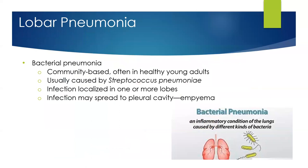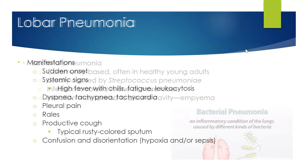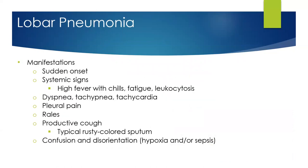Lobar pneumonia is usually a bacterial, community-based pneumonia that can happen in young adults, though it is more common in the elderly. It is usually caused by Streptococcus pneumoniae. The infection is localized in one or more lobes but can also spread to the pleural cavity, which is then called empyema. Symptoms include sudden onset with high fever with chills, fatigue, and leukocytosis — an elevated white blood cell count. These patients often look very sick, with dyspnea, tachypnea, and tachycardia.